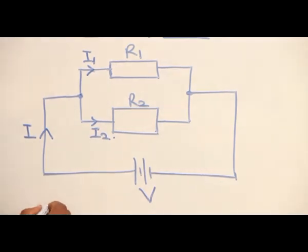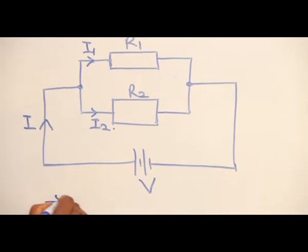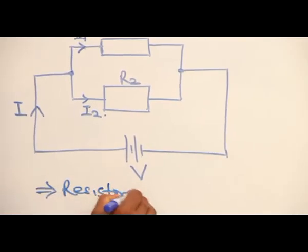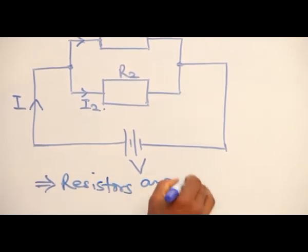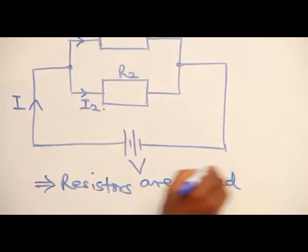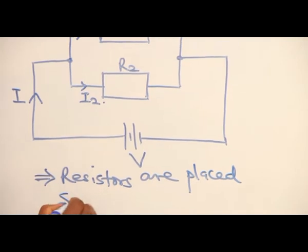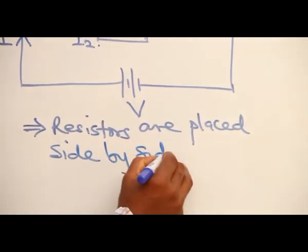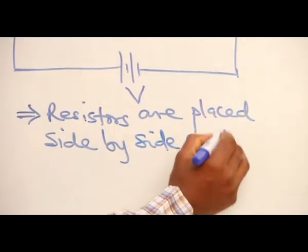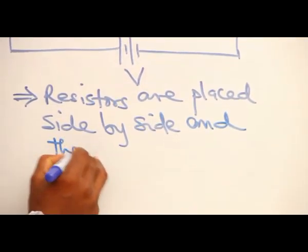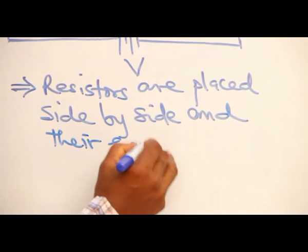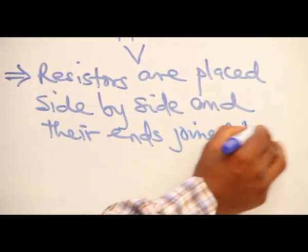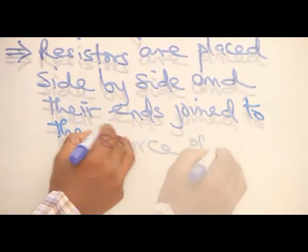The first statement I want to make is that the resistors are placed side by side and their ends are joined to the source of voltage.